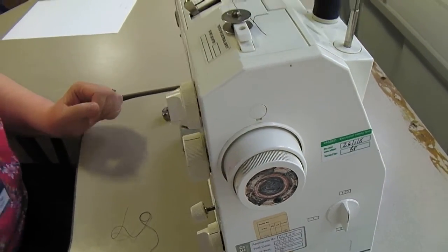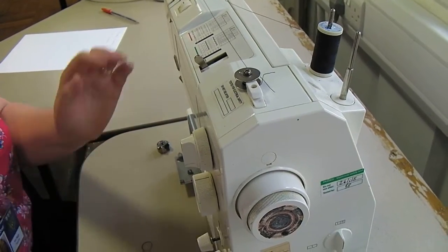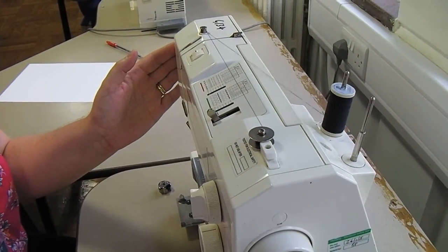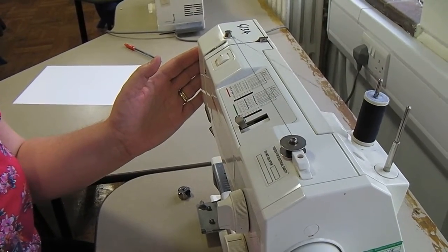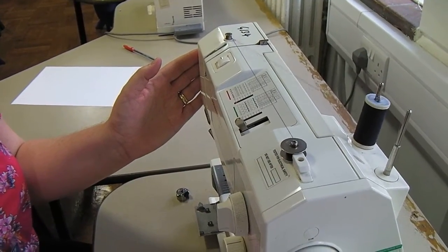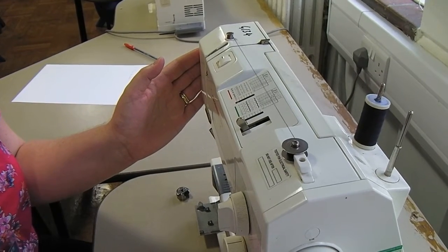You are then ready to press on the presser foot and the bobbin to wind on. Press gently so that the cotton winds onto the bobbin in an even manner. Keep doing this until you have enough cotton.